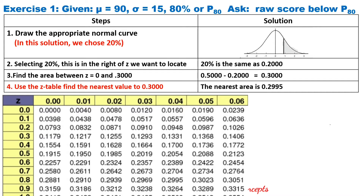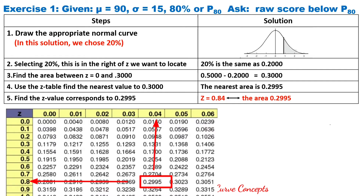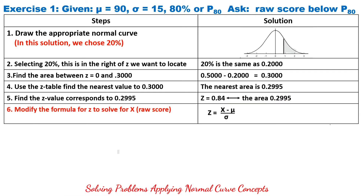Next, use the Z-table to find the nearest value to 0.3000. From the Z-table, the nearest area is 0.2995. Then find the Z value that corresponds to 0.2995, and from the Z-table, it is 0.84.